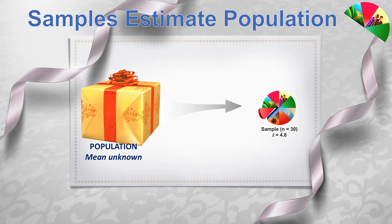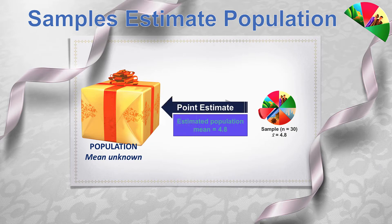In this case we have a sample of size 30 and the mean of the sample is 4.8. What we will determine is that in general the best estimate for our population mean is our sample mean. That's estimation, and we've done that in previous weeks.